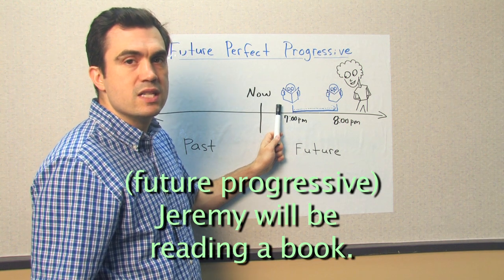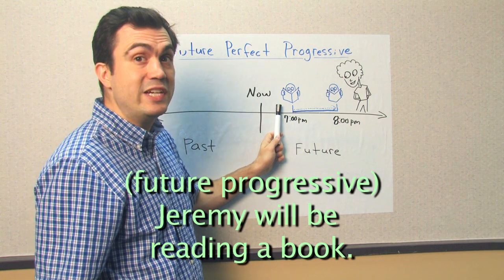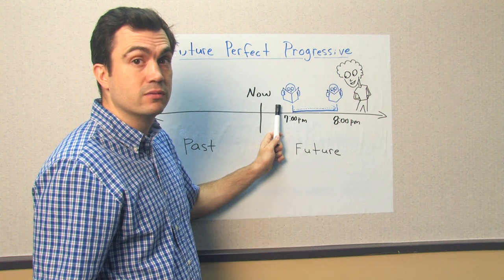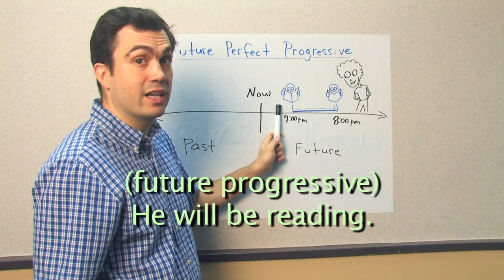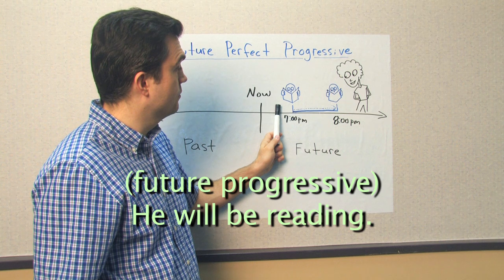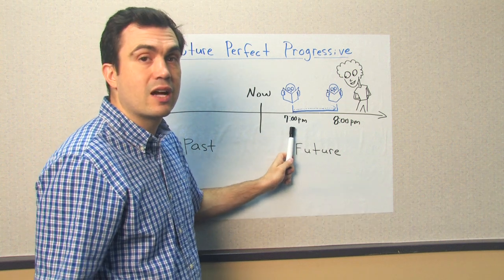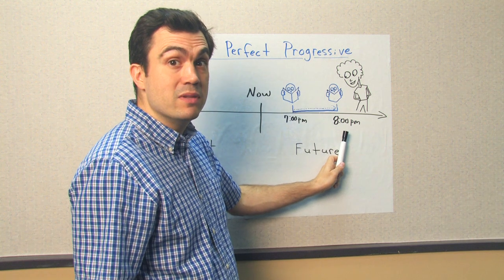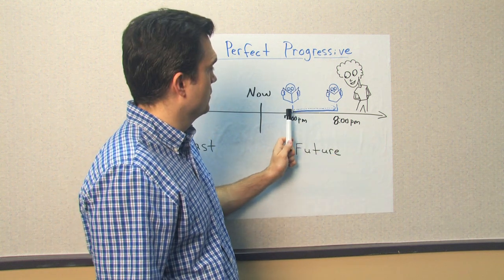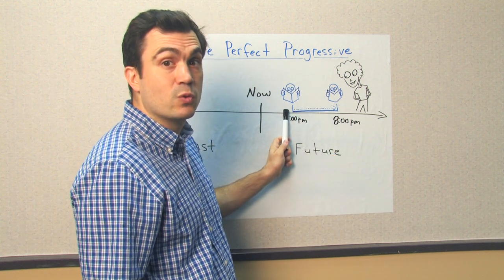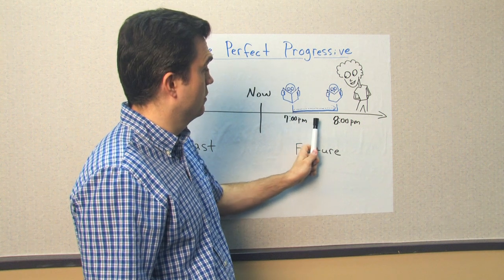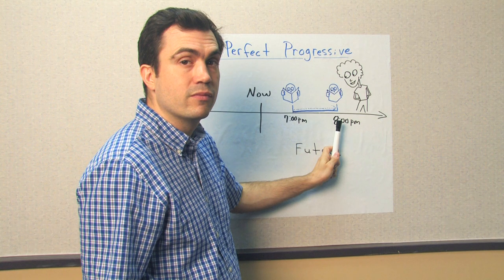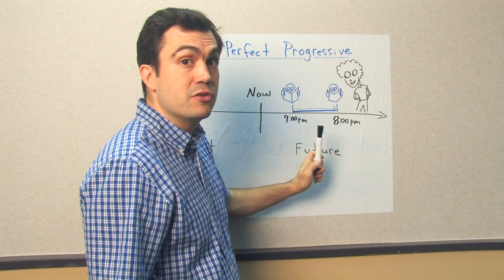So Jeremy will be reading a book in the future — he will be reading in the future. 7 o'clock p.m. is in the future, 8 o'clock p.m. is in the future. Jeremy will be reading during this time. That was future progressive.